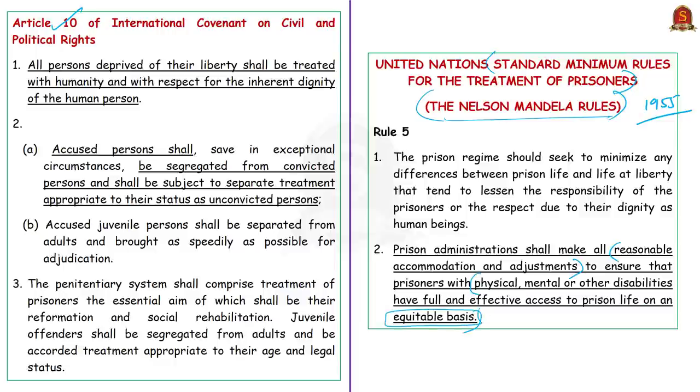The Nelson Mandela Rules require that the prison administration shall make all reasonable accommodation and adjustments to ensure that prisoners with physical, mental, or other disabilities have full and effective access to prison life on an equitable basis. That is why the author states that in the Stan Swamy case, the state has breached its obligation.